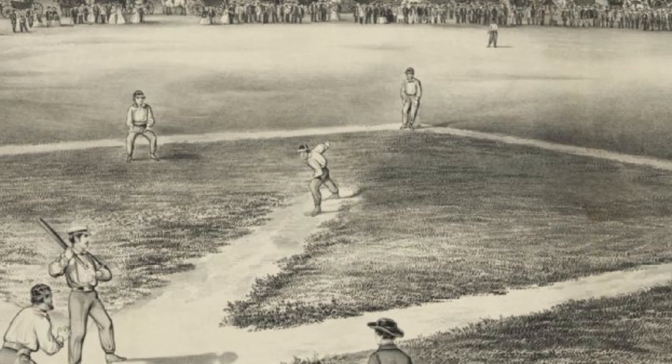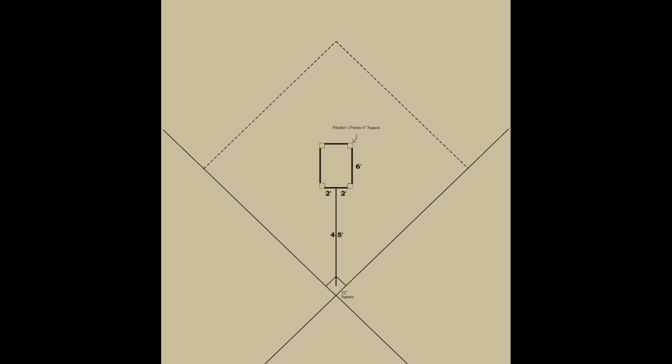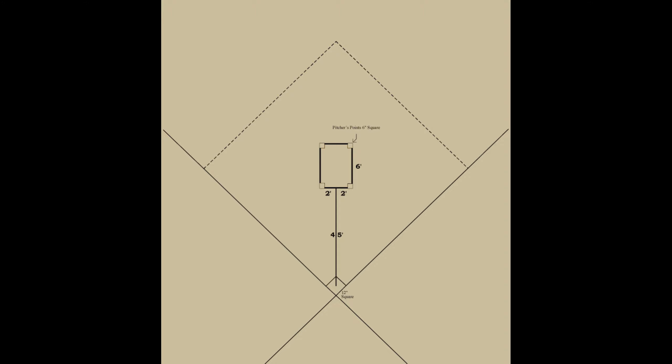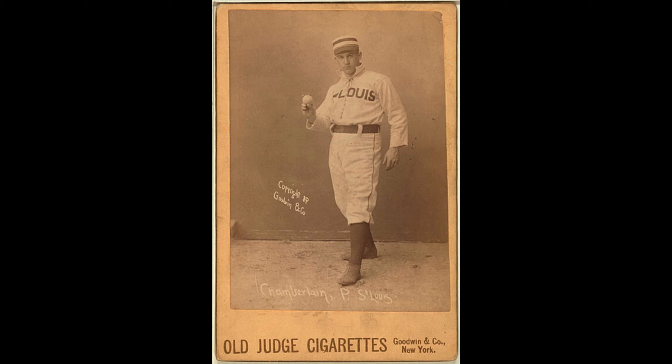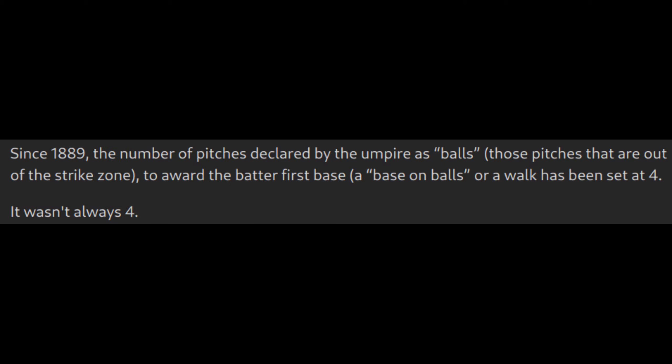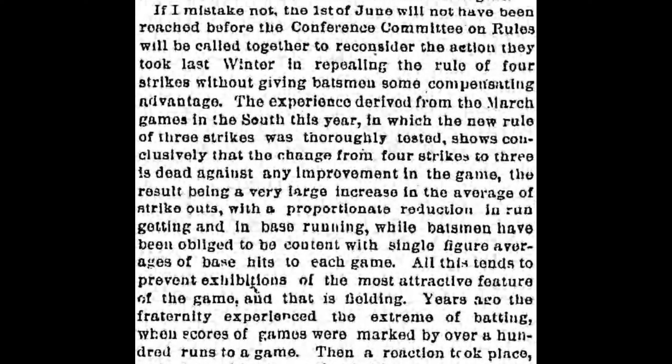Throwing overhand had been around for maybe four or five years. The pitching box was on flat ground — about 55 and a half feet from home plate. That's right, there was no pitching mound yet. This was the first year in which only four balls made a walk. The strikeout had been defined as three strikes the year before, in 1888. In fact, they had tried four strikes for a strikeout back in 1887.